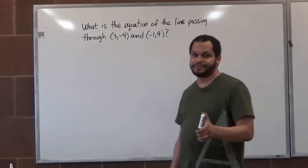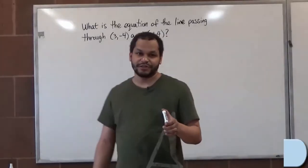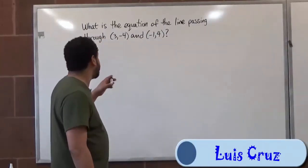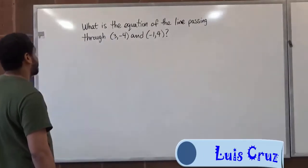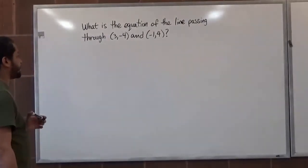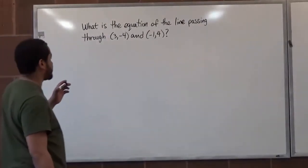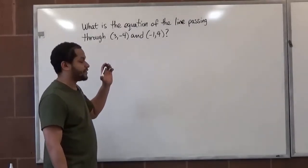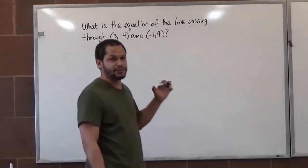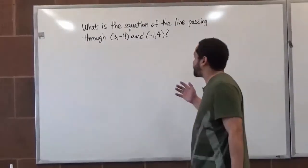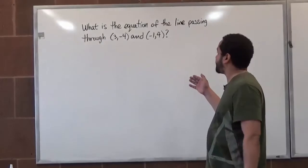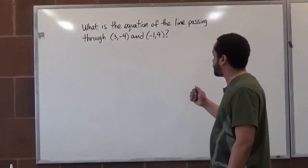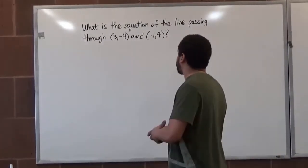Welcome to HelpYourMath.com. In today's video, we'll be finding the equation of a line. The particular question is: what is the equation of the line passing through the point (3, -4) and the point (-1, 4)? To solve this, we'll use the slope equation, and once we have the slope, we'll use slope-intercept form to solve it.